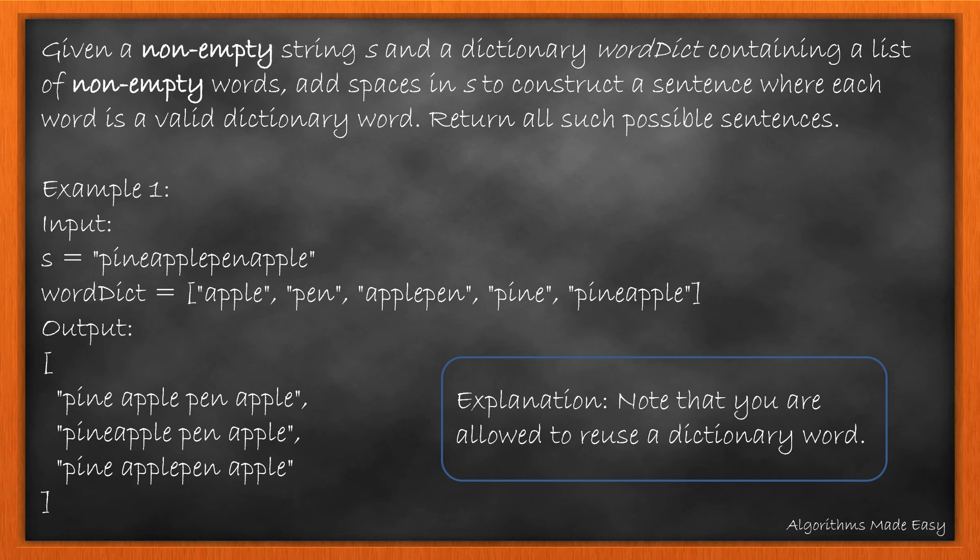Given a non-empty string S and a dictionary word dict containing a list of non-empty words, add spaces in S to construct a sentence where each word is a valid dictionary word and return all such possible sentences.